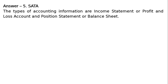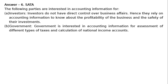Question 6: Why are the following parties interested in accounting information? The parties are investors and government. Answer 6: Investors do not have direct control over business affairs. Hence, they rely on accounting information to know about the profitability of the business and the safety of their investments. Government is interested in accounting information for assessment of different types of taxes and calculation of national income accounts.